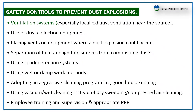Let us see some of the controls for prevention of dust explosions at workplaces: ventilation systems, especially local dust ventilation near the source; use of dust collection equipment; placing vents on equipment where a dust explosion could occur; separation of heat and ignition sources from combustible dust; using spark detection systems; using wet or damp work methods; adopting an aggressive cleaning program; using vacuum or wet cleaning instead of dry sweeping or compressed air cleaning; and employee training, supervision, and proper PPE.